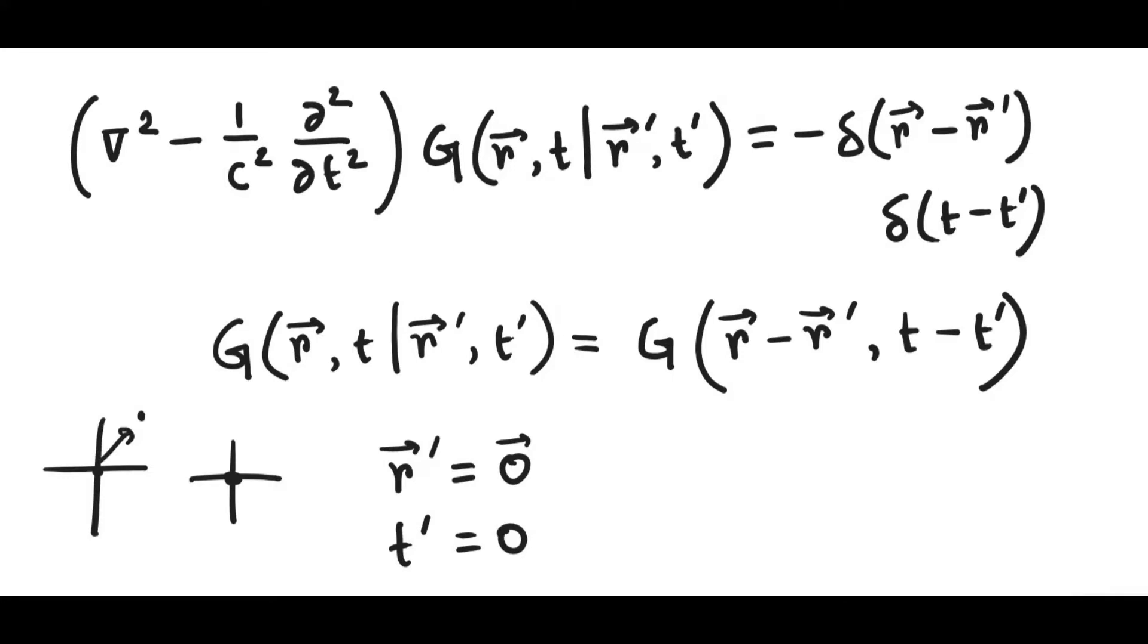Besides, we can always substitute this forms in the place of R' and T later. Once we have got the full expression, then we can write down the general prescription for it. So that allows us to further simplify the expression for Green's function, which is G is only a function of R and T.